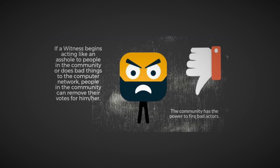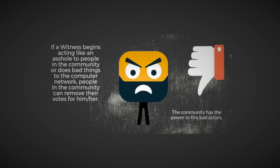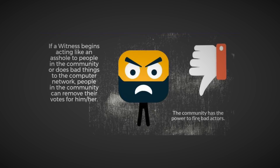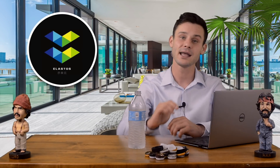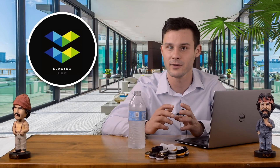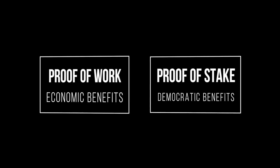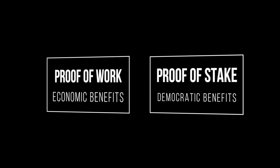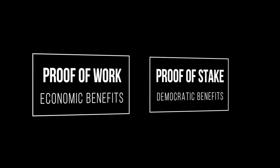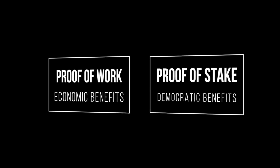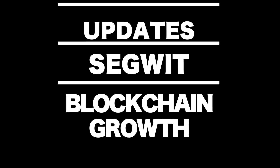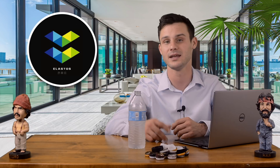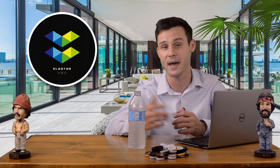If the witness begins acting poorly or stops doing a quality job, people in the community can remove their votes, essentially firing the bad actor. By combining these two consensus algorithms, we get the economic benefits of proof of work with the democracy benefits of delegated proof of stake. Coin holders and miners will be able to participate in voting and together take part in major decisions for the Elastos community. They will be able to influence pre-programmed updates such as Segwit, blockchain growth, and more. If these updates are widely accepted, the developers don't need to intervene, as the chain will automatically fork to match the update.